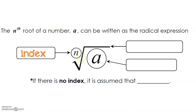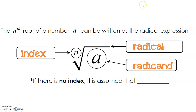This symbol is called a radical, and you'll remember at the beginning of this chapter we actually talked about this. Everything that's inside the radical is called the radicand. Think about it as it's canned inside of a radical — it's canned inside.